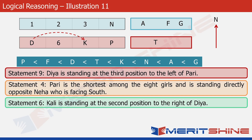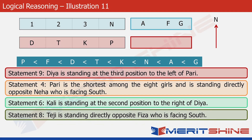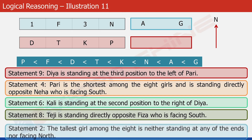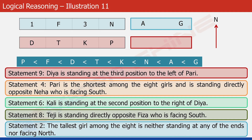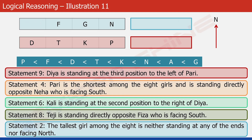The only position left in the north-facing block is six, and the only girl left is T, so Teji occupies position six. Statement eight tells us that Teji is standing directly opposite Fiza — the position directly opposite Teji is two — so Fiza has to occupy position two. Statement two tells us that the tallest girl is not standing at any of the ends. The tallest girl is G, that's Gatti — if she cannot be at position one, the only position left for her is three. The only position remaining is one, and the only girl left is Avni, so Avni occupies position one. With this step, we have completed the solution to the problem.